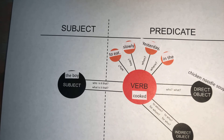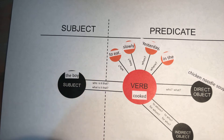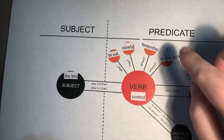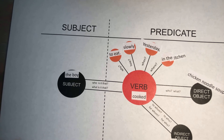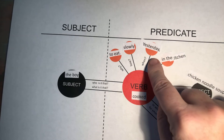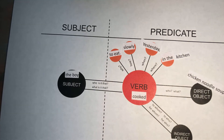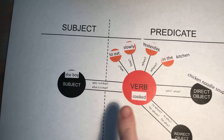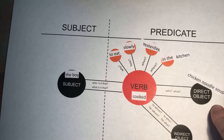We can cut off the word 'for.' He cooked it in the kitchen for his mom. So we know that the boy cooked chicken noodle soup for his mom. He cooked it slowly. He cooked it yesterday. He cooked it in the kitchen. He cooked it for his mom to eat. Our subject is the boy. Our predicate is how the boy cooked the soup and who he cooked it for.